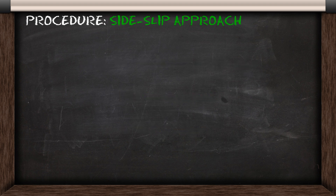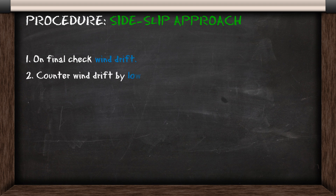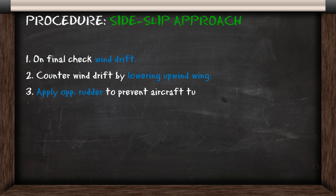First up we're going to cover the side slip approach. To fly a side slip approach you first need to check for wind drift on final, then you counter that wind drift by lowering your upwind wing and then to prevent the aircraft turning you apply opposite rudder, and then you maintain this side slip down towards the airfield where you flare and touch down on the upwind wheel.